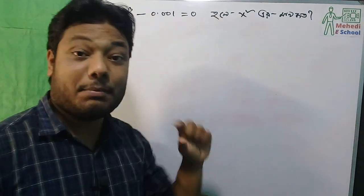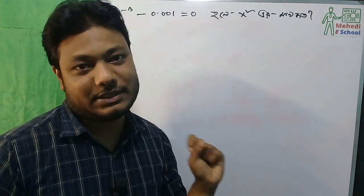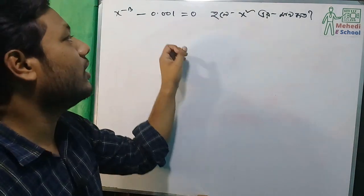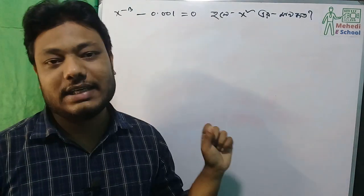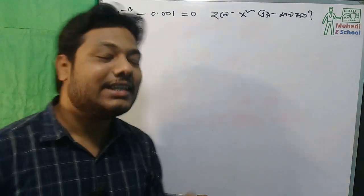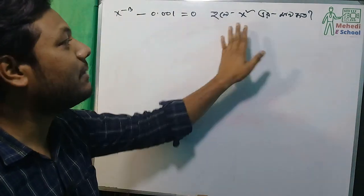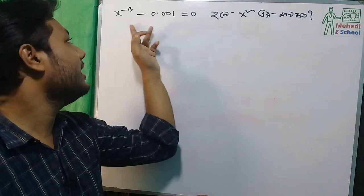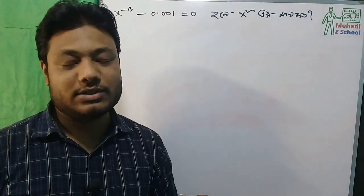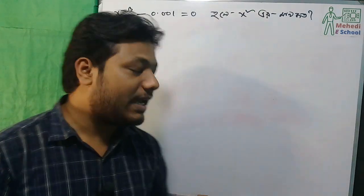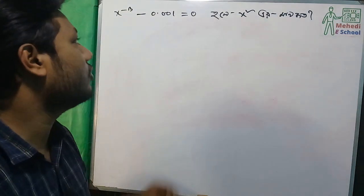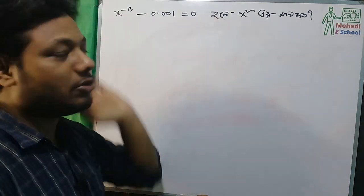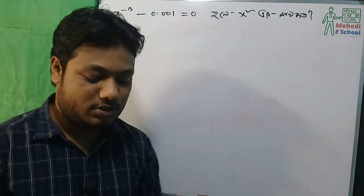x to the power minus cube minus 0.001 equal to 0, x square. Now we will work through this.